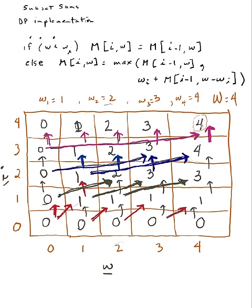There are two ways to get here. Path one: I did not use item 4. Then coming down, I did use item 3. Then I did not use item 2. Then I did use item 1. So I've got items 3 and 1, and weight three plus one equals four. Path two: I use item 4, then did not use 3, did not use 2, did not use 1. That also gives a total weight of four.